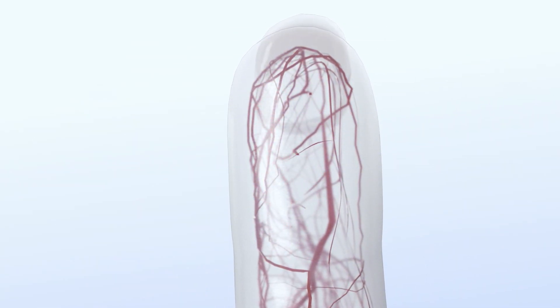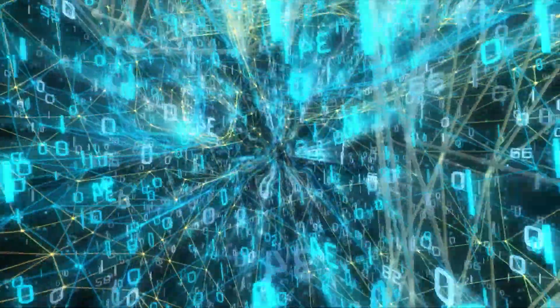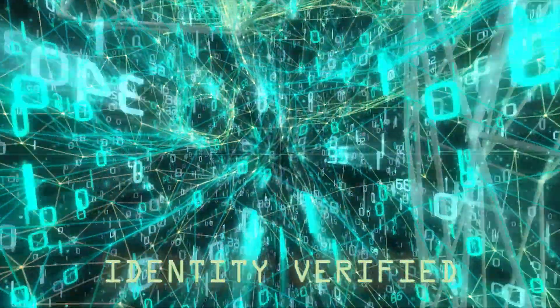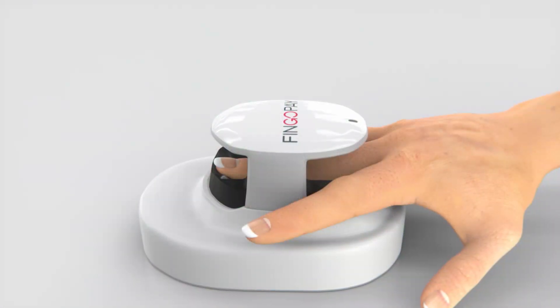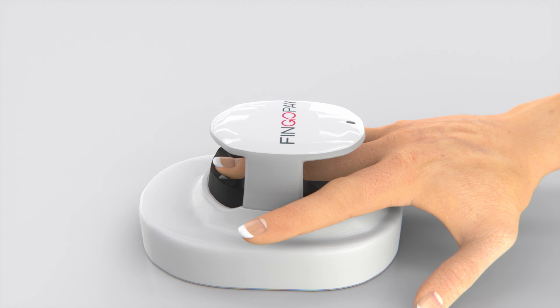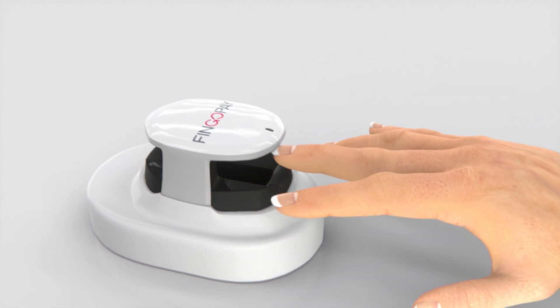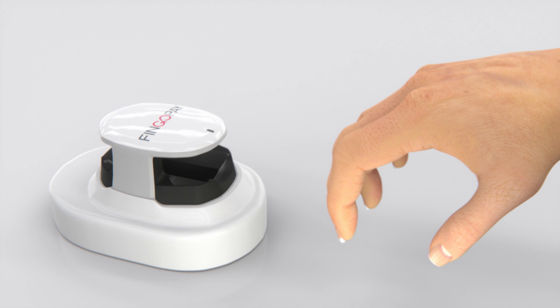The image is converted into an encrypted template and matched to the one stored on our database. It confirms your identity in a matter of seconds. Finger Pay is an efficient, intelligent, and secure way to handle transactions. For payment as unique as you.